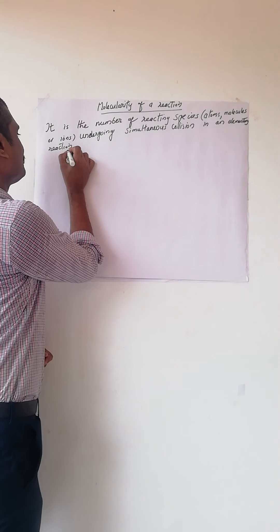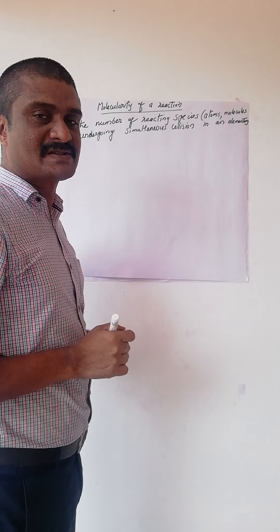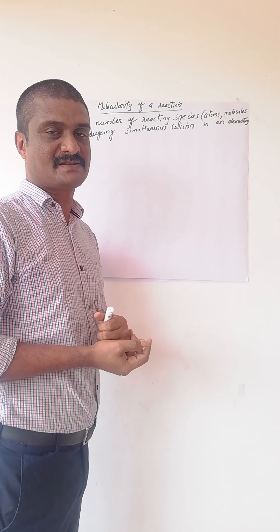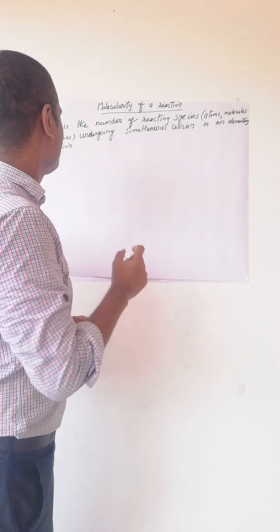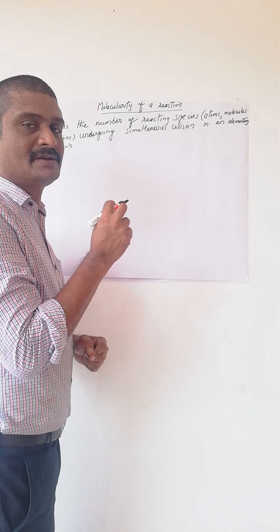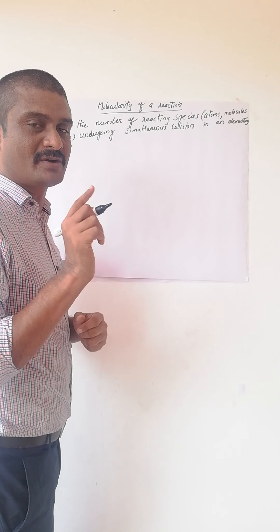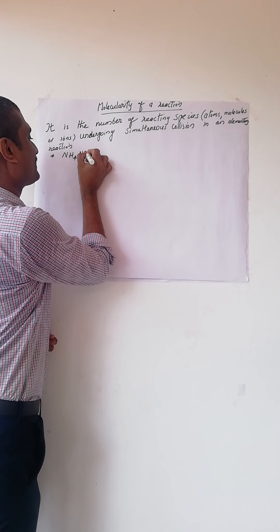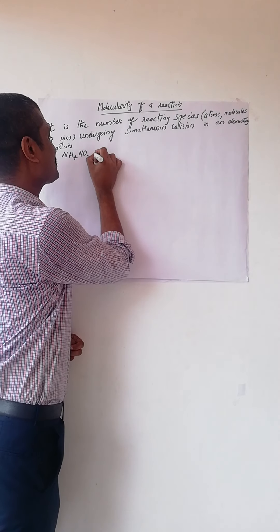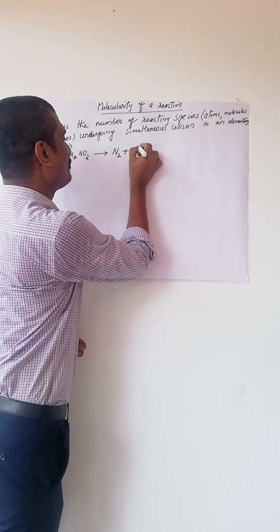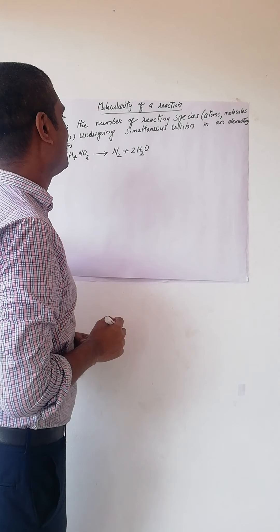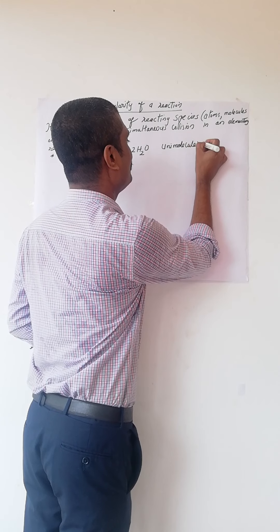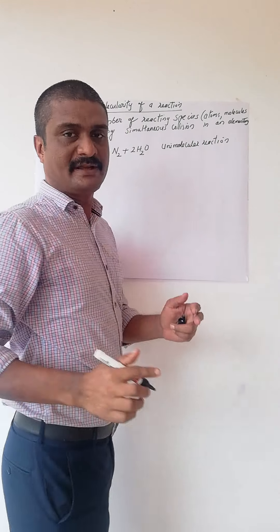If the reaction involves the decomposition of a single species or one reactant, the reaction is called unimolecular and its molecularity is one. For example, ammonium nitrate decomposes to form nitrogen and water — in this case molecularity is one, hence it is called a unimolecular reaction.